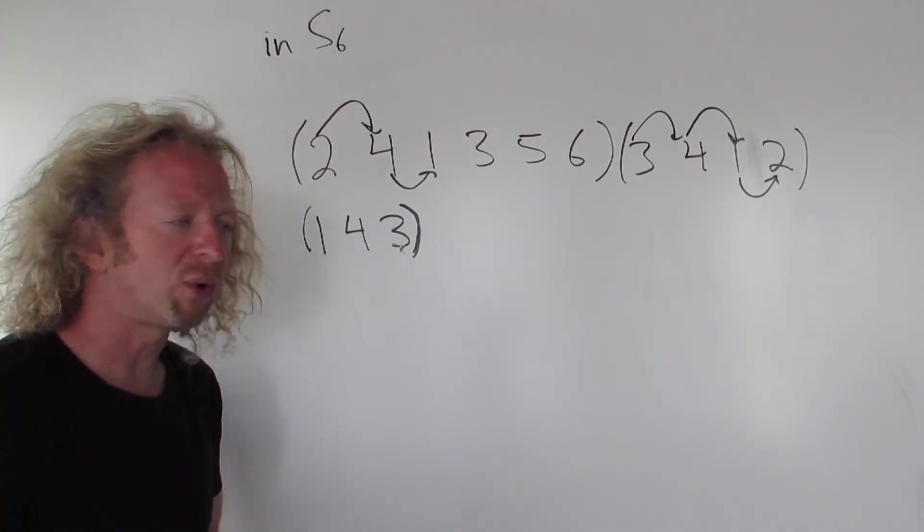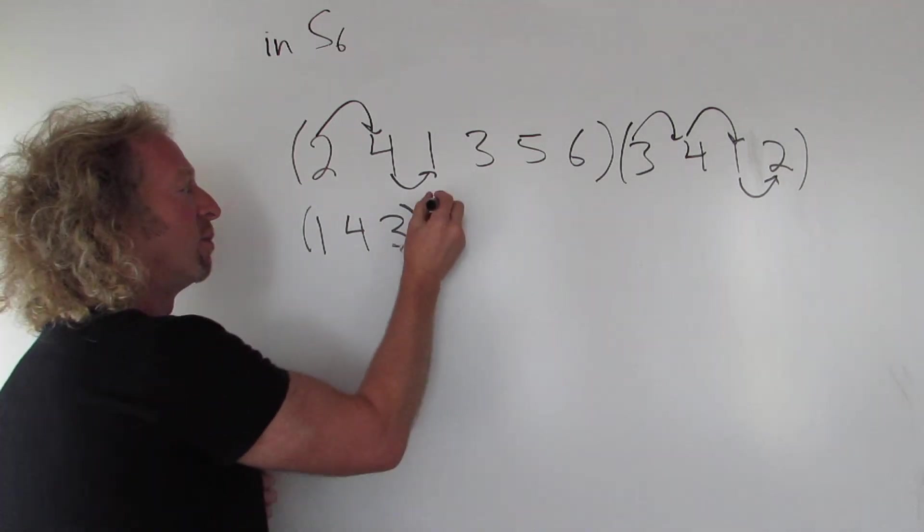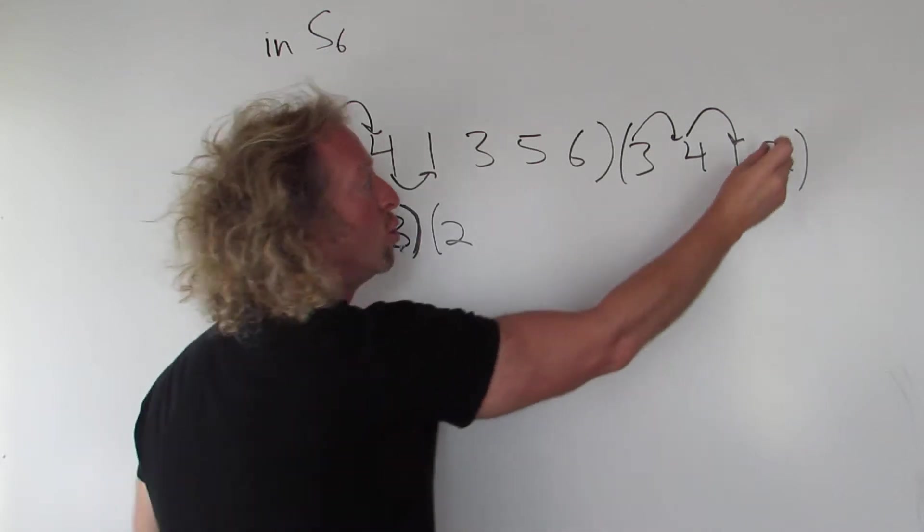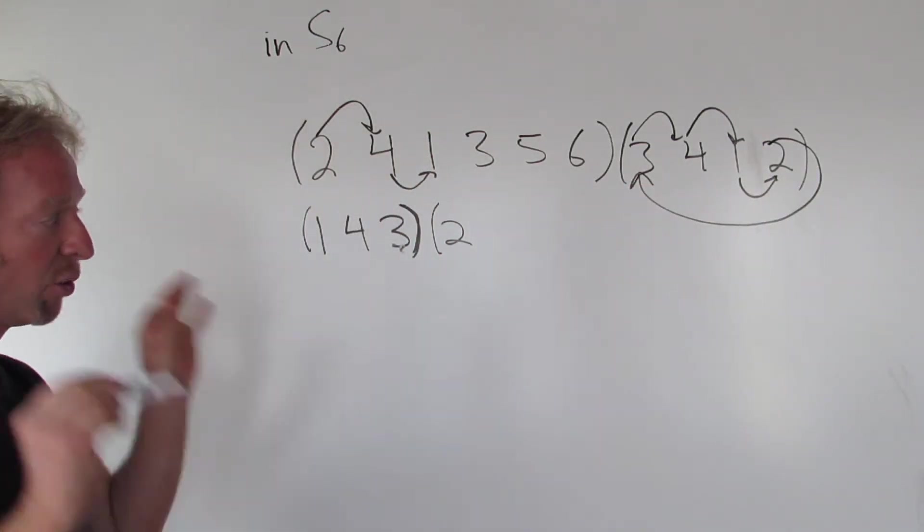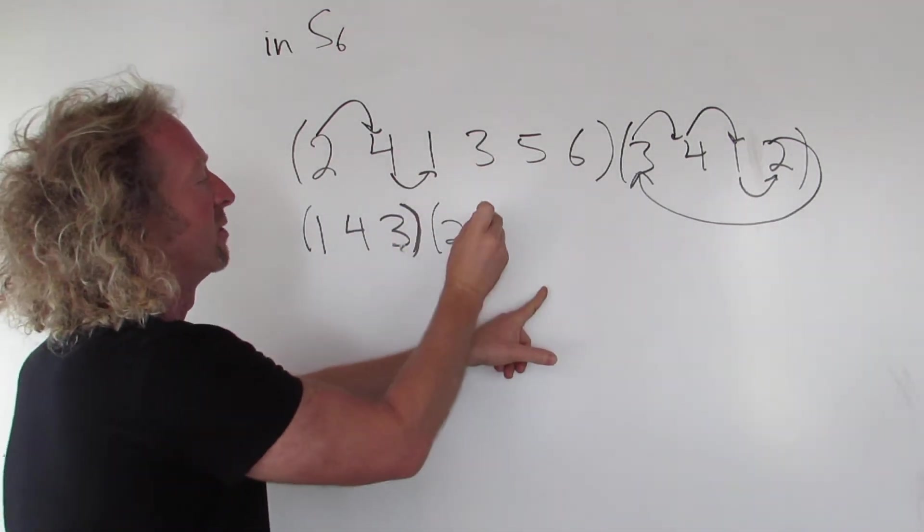All right, so what do we do next? Well, now we can pick any of the other numbers we're missing. Let's use two. So parentheses two. Let's see what happens here. So two's over here. So two goes all the way back to three. Now we look for the three. Three goes to five. That means two goes to five.